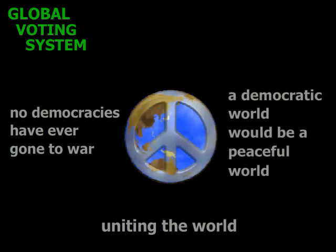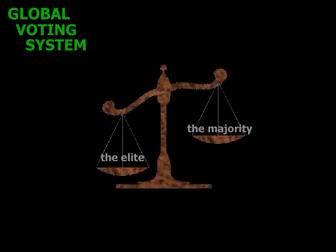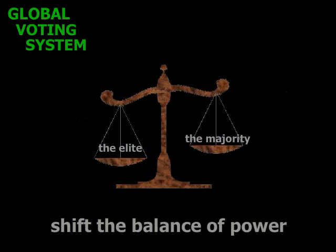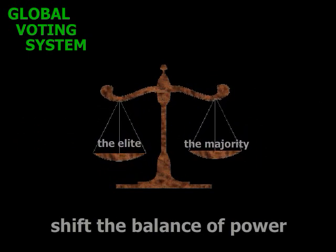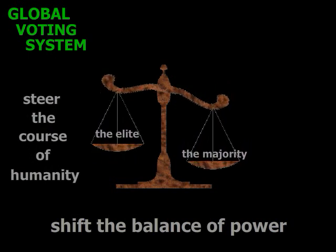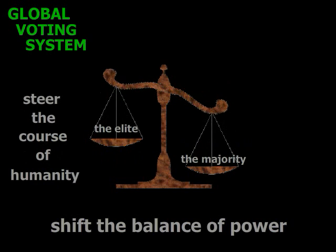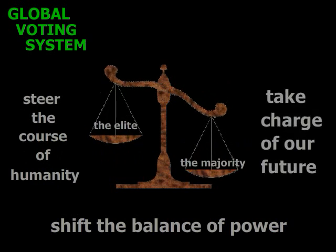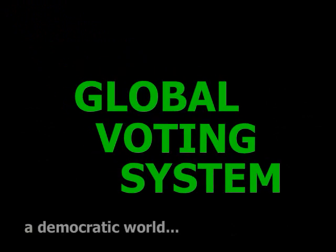In the past two centuries, no democratic nations have ever gone to war with each other. If we had democracy throughout the world, we would have a world without politically organized war — a world of peace. Another awesome potential of the Global Voting System is to shift the balance of power away from the hands of the few and put it into the hands of the people. When we the people are empowered, we can better steer the course of humanity, ensure that the products of our labor go to where we see fit, and take charge of our future. A democratic world — get yours today.